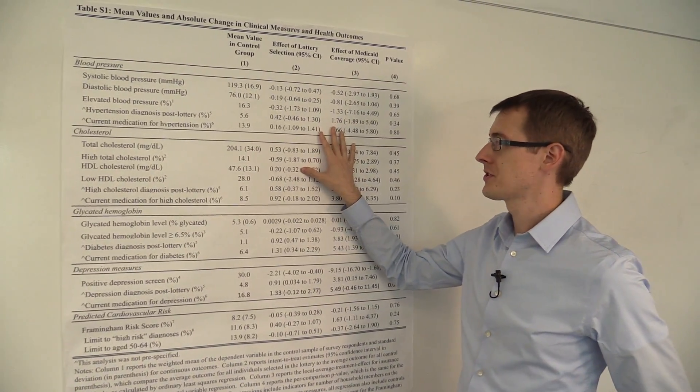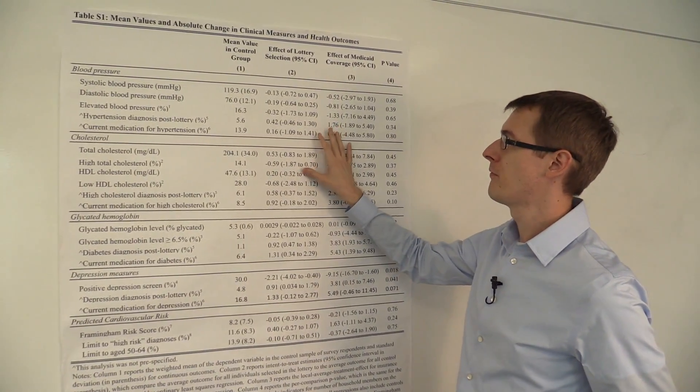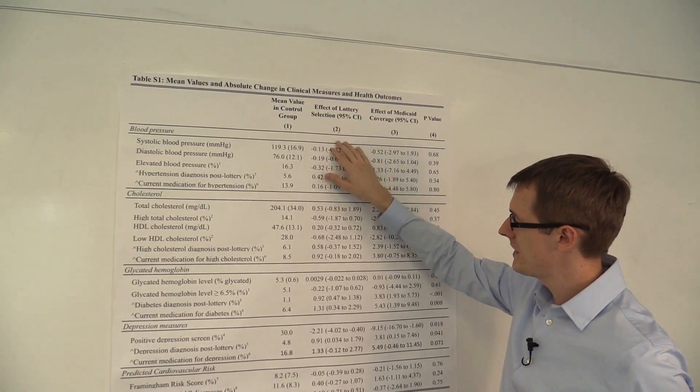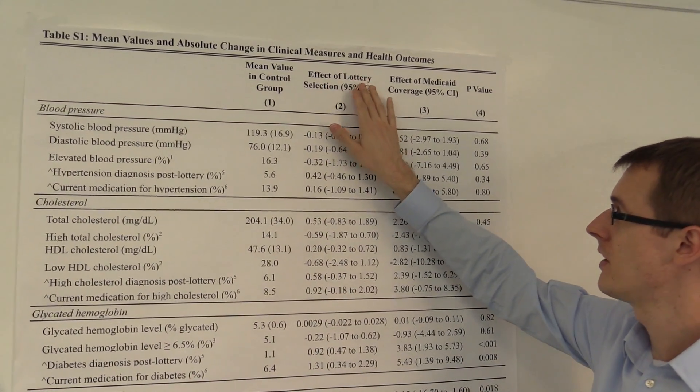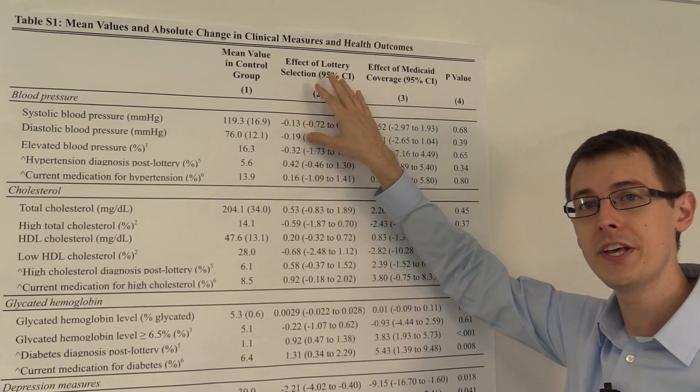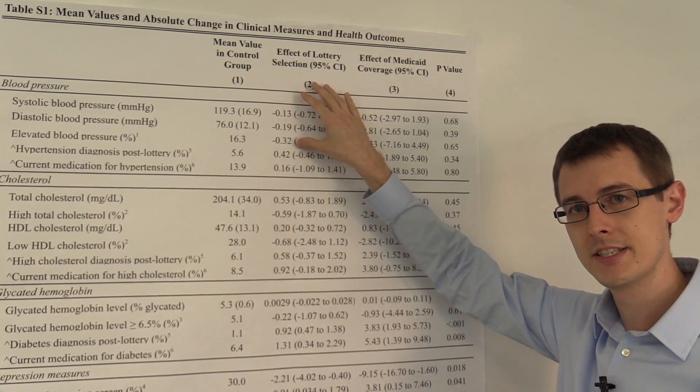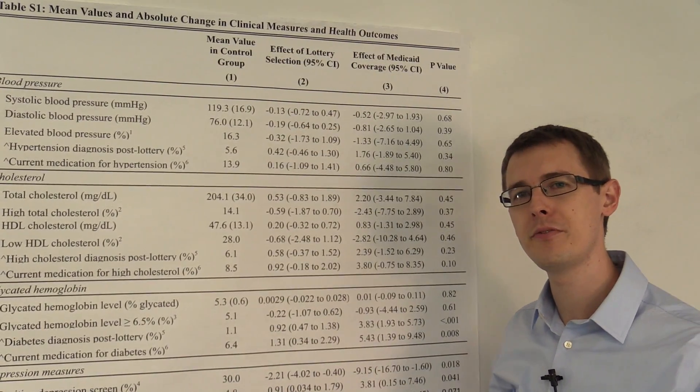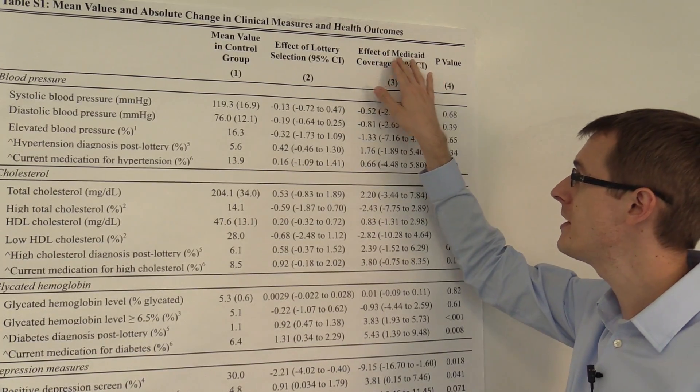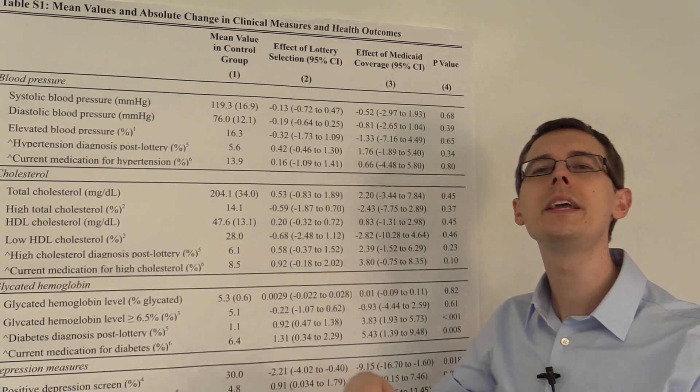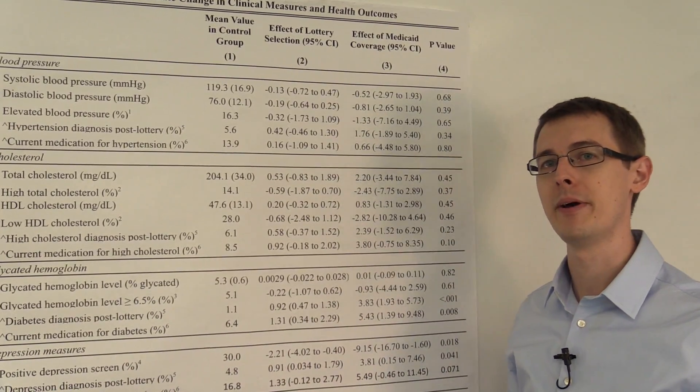Let's look at that in action with the Oregon Healthcare experiment. Here's our table of results that we looked at earlier. Before, we examined this column here, the effect of lottery selection. This was our intention-to-treat analysis, where we redefined the treatment variable from receiving Medicaid to just being given the option of receiving Medicaid.